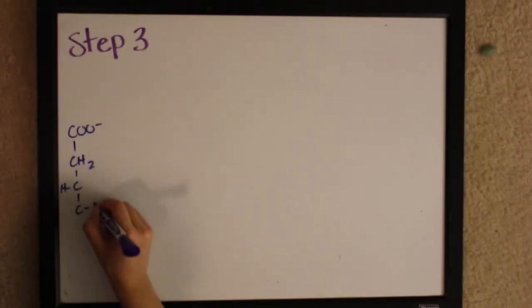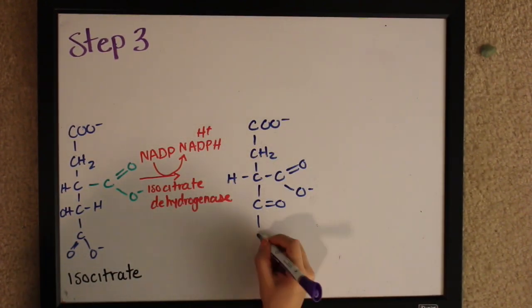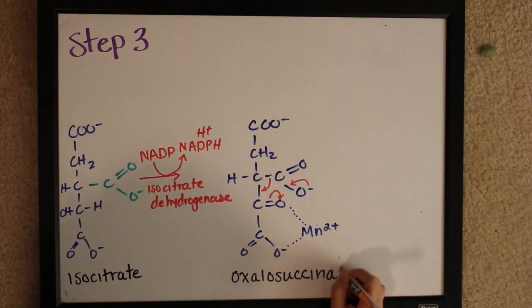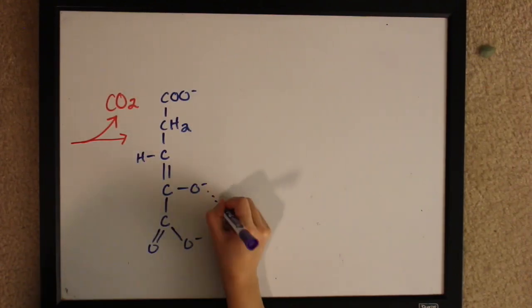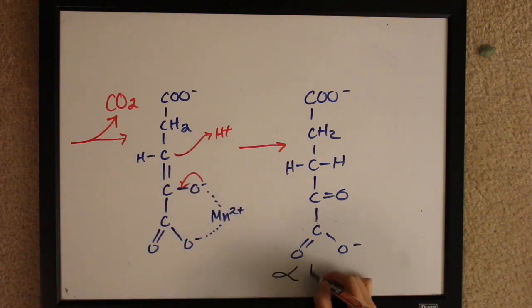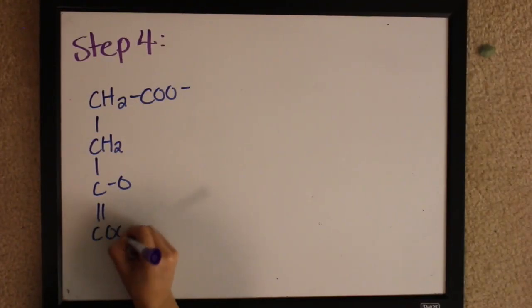Step three starts with isocitrate and then we have our enzyme, isocitrate dehydrogenase. Here we move a couple things around to make the product that we need, but the step isn't done. We release CO2, move stuff around, and then finally give us the step three product of alpha-ketoglutarate.